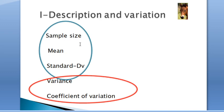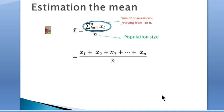To describe either a sample or a population, the sample size or population size, the mean, and the standard deviation is used. Meanwhile, for the variation we have the variance and the coefficient of variation.